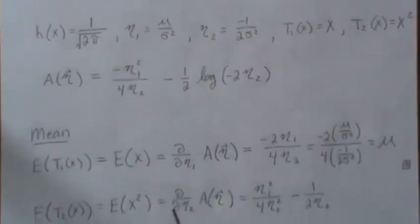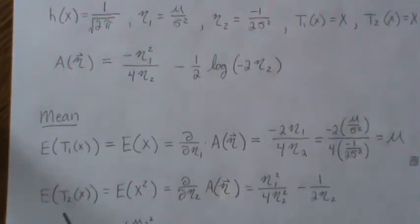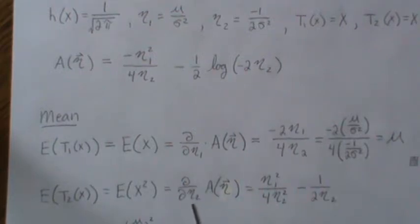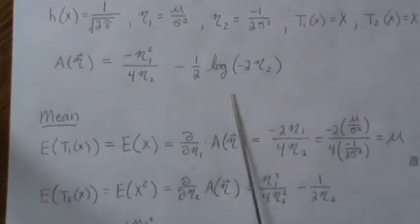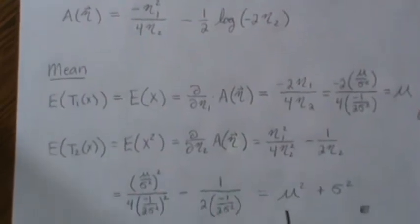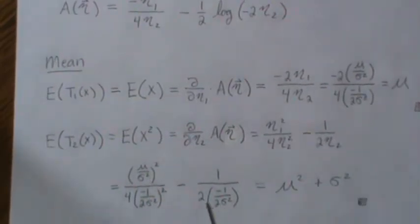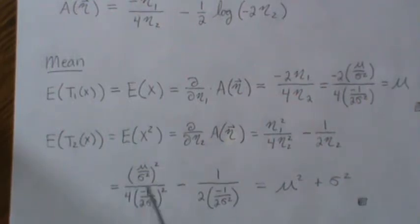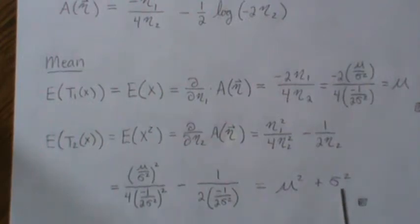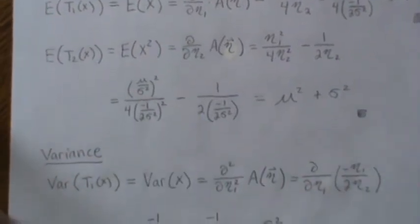The mean of the second sufficient statistic is the expected value of x squared, which equals the partial with respect to eta 2 of our log partition. We have two terms with eta 2 and we get this, then we plug in what eta 1 and eta 2 equal and it reduces. Notice that if we take the expected value of x squared minus the mean squared we get the variance, as we should.